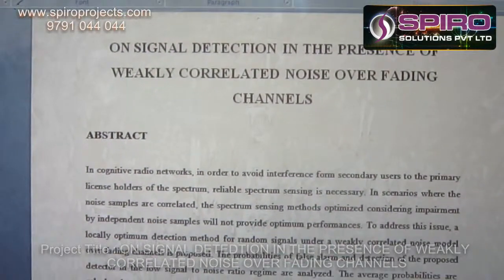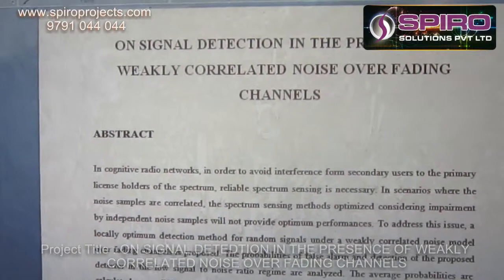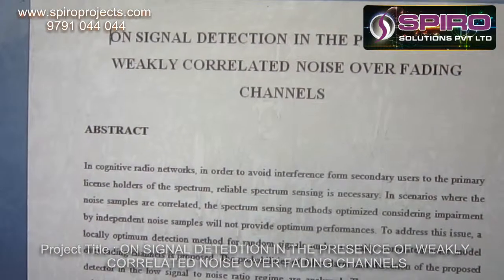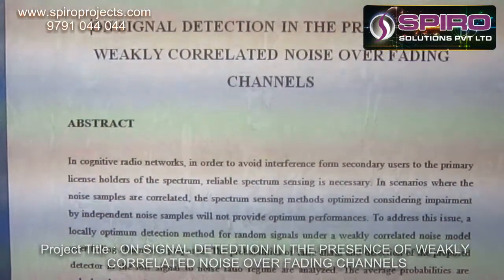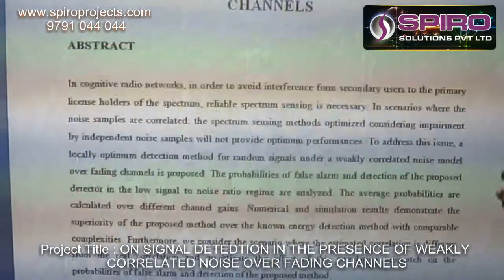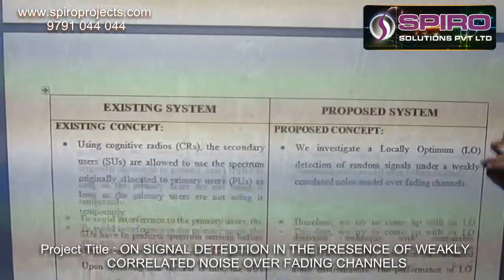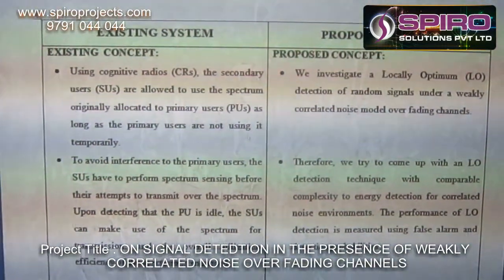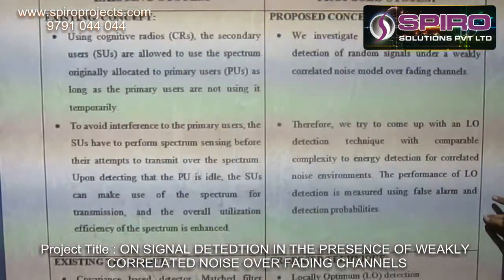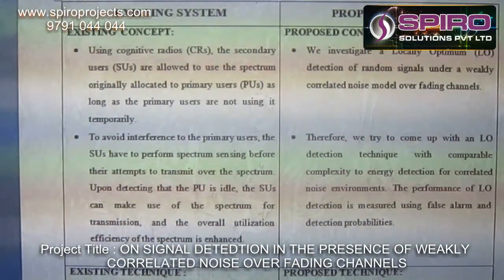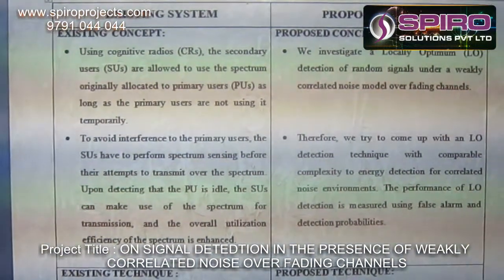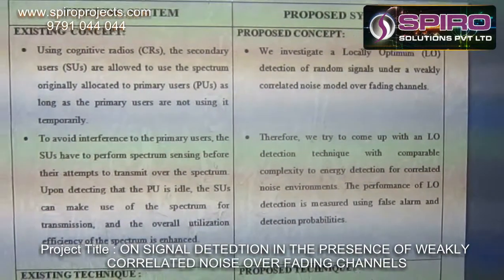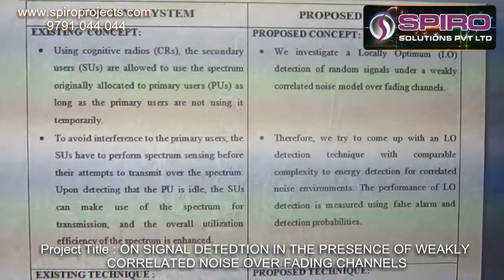This project mainly uses the CRM concept in the cognitive radio network to avoid interference from secondary users to primary users in the licensed spectrum. In the existing system, a covariance of matched filter based around PSK is used, but we are using local optimum detection of a random signal under a weakly correlated noise model fading channels.